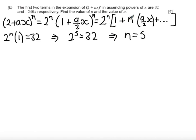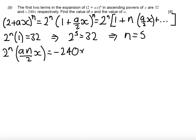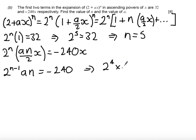For my second term I get 2^n times n times (a/2) times x. Tidying up, 2^n divided by 2 gives 2^(n-1), so the second term is 2^(n-1) times a times n times x, and this equals -240x. Putting in n equals 5, I get 2 to the power of 4 times a times 5 equals -240. Since 2^4 is 16, that gives 16 times 5 equals 80, so 80a equals -240.